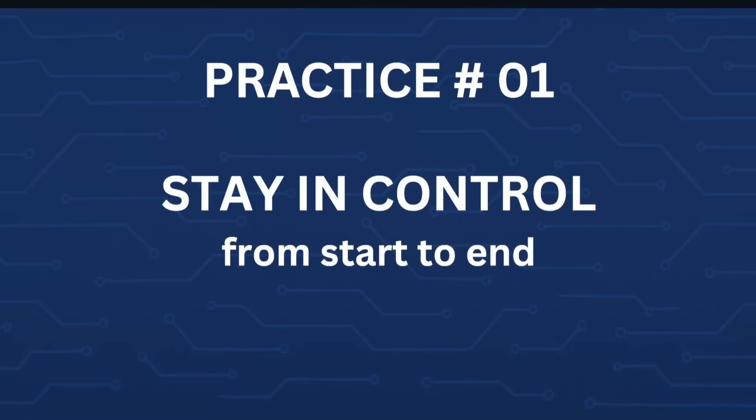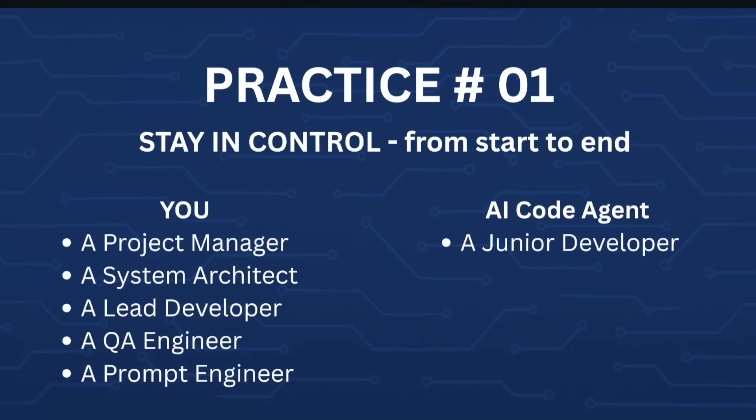So your first must-do practice is to stay in control of your project from start to end. This means you practically take the roles of a project manager, system architect, lead developer, QA engineer, and a very good prompt engineer — while you treat your AI code agent just as a junior developer. Don't worry if you haven't been in these roles; they are not those conventional roles. You will get help from your LLM, and every next practice will clarify this.